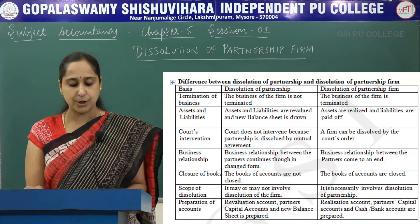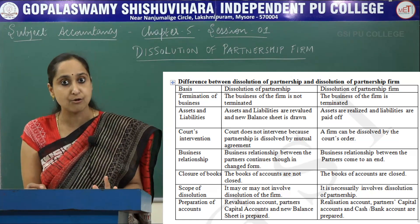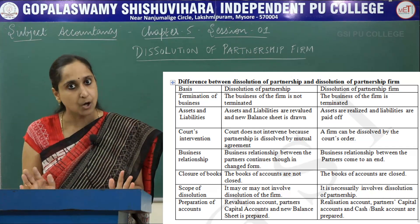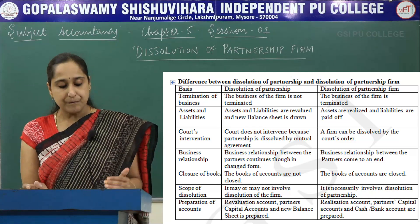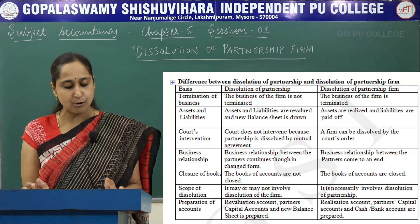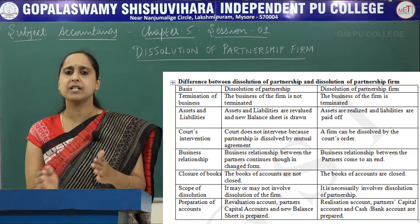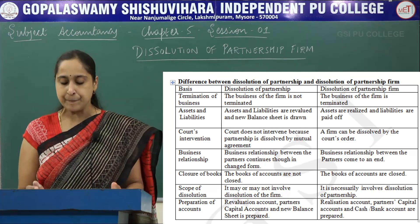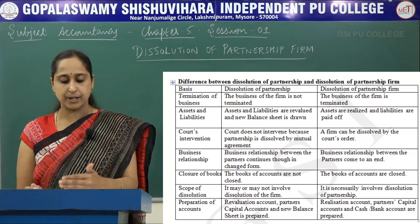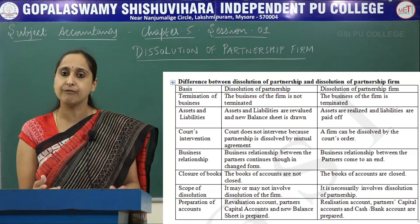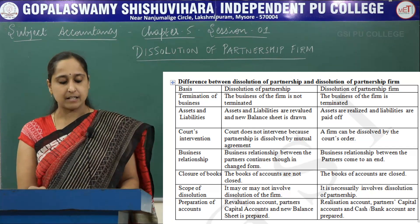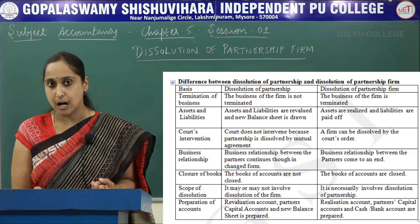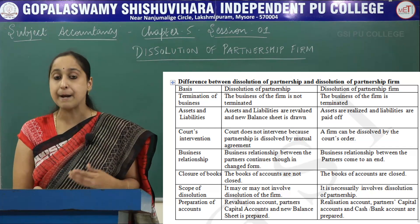In Dissolution of Partnership, the books of accounts are not closed. But in Dissolution of Partnership Firm, all the books of accounts are closed. Next, on the scope of dissolution: Dissolution of Partnership may or may not involve dissolution of the firm, and there is no question of dissolution of the firm — only the partnership comes to an end. In Dissolution of Partnership Firm, it necessarily involves Dissolution of Partnership. In Dissolution of Partnership, we usually prepare Revaluation Account, Partners Capital Account, and Balance Sheet.